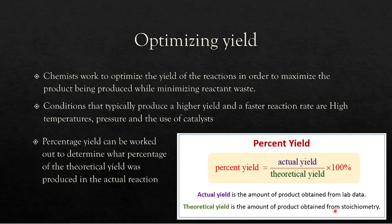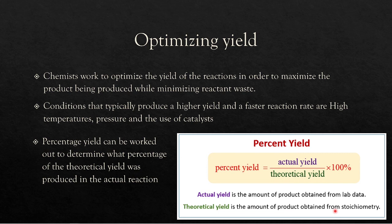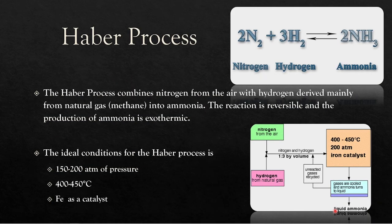Chemists work to optimize the yield of reactants in order to maximize product while minimizing reactant waste. Reactants cost money, and so do conditions like temperature and pressure, so high yields are important in a business context. You can calculate percentage yield by taking the actual yield divided by the theoretical yield from stoichiometry, then multiplying by 100%.